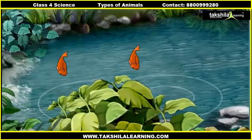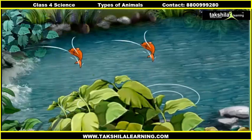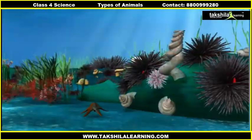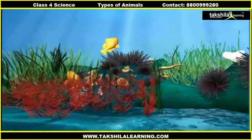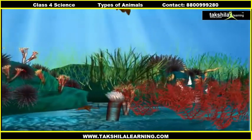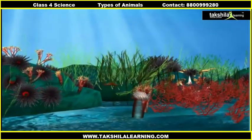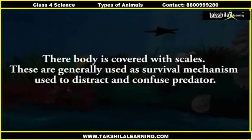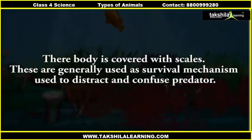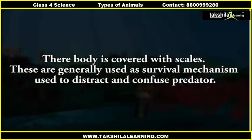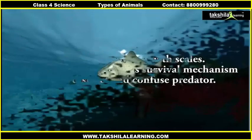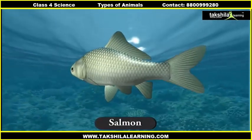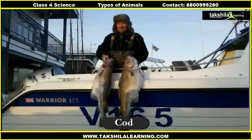Let us first discuss about fish. This group consists of a large variety of animals that live in water. These animals breathe through gills and have fins to swim. Their body is covered with scales, which are generally used as a survival mechanism to distract and confuse predators. Examples of fish are salmon, cod, etc.